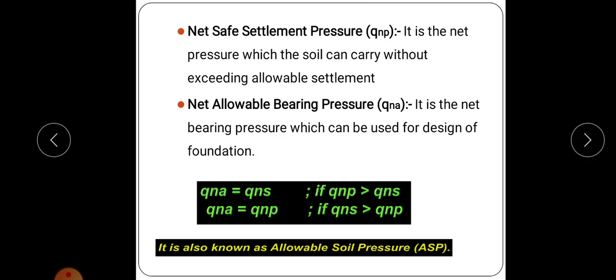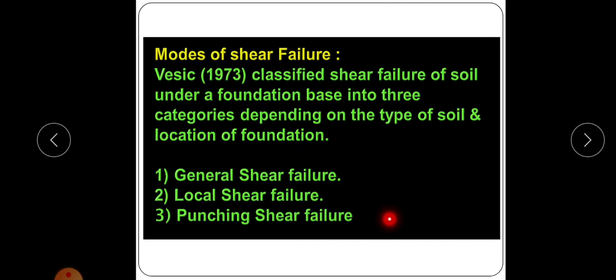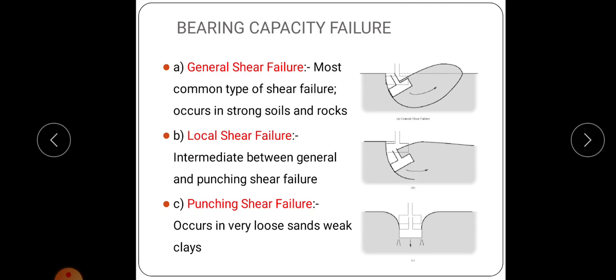Those are the definitions we studied in the last lecture. In today's class we will study different types of shear failure. A scientist classified shear failure of soil into three types: general shear failure, local shear failure, and punching shear failure. These are the different types of bearing capacity failure occurring in soil.